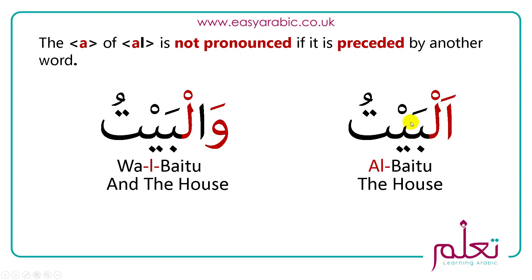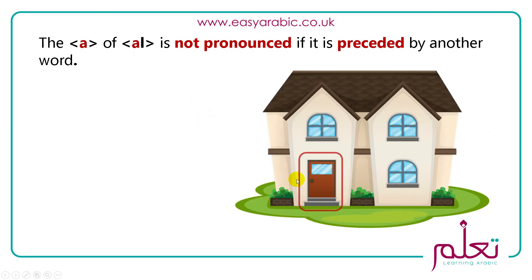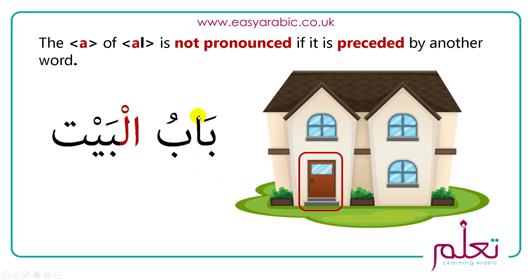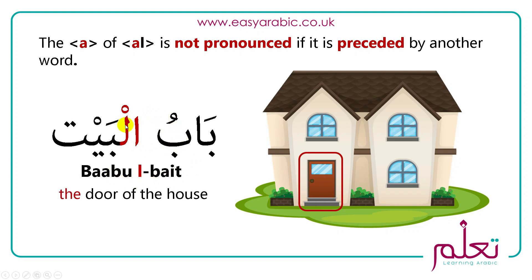Another example: babul bayt, the door of the house. We have babul, the door, followed by al-baytu. We ignore the alif and join the ba onto the lam, so it becomes babul bayt. Don't worry — we'll do plenty more exercises as we go through the course and you'll just pick this up. So that was the moon letters; now let's look at the sun letters.